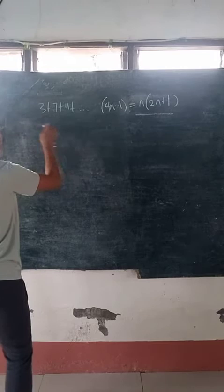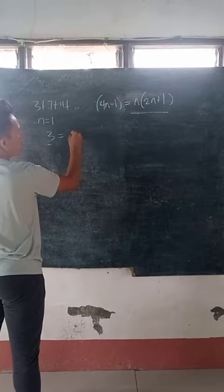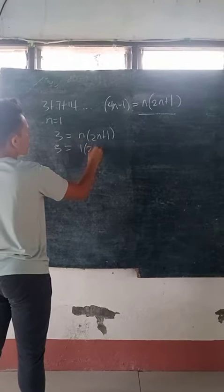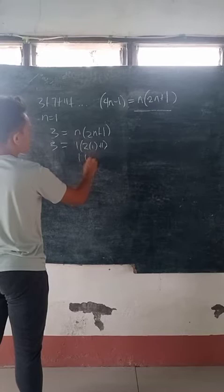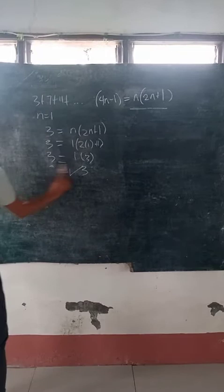Our n is equal to 1 because it is the first term. So our first term is 3. So 3 is equal to n times 2n plus 1. We substitute: 3 is equal to 1 times 2 times 1 plus 1. So 2 times 1 is 2, plus 1 is 3. So 1 times 3 is equal to 3. So it is true, 3 is equal to 3.